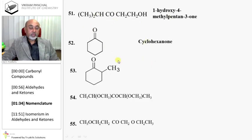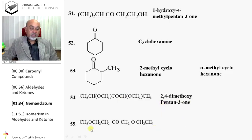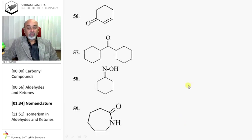Cyclohexanone. 2-Methylcyclohexanone. 2,4-Dimethoxypentane-3-one. 1-Ethoxypentane-3-one; also 1-ethoxypentane-2-one. Cyclohex-2-en-1-one.